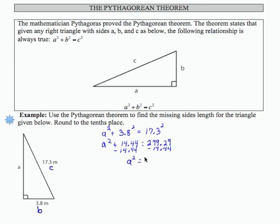On the right-hand side, I get 284.85. Once I'm at this step, where I have a squared equals a number,